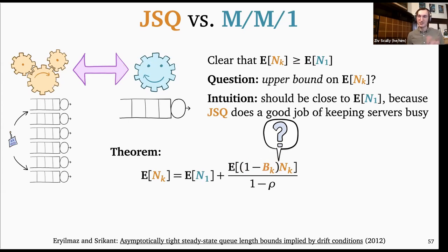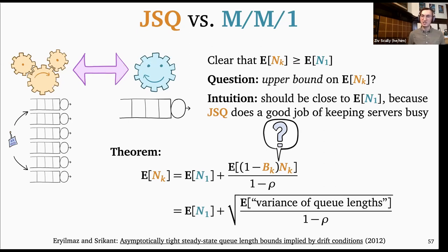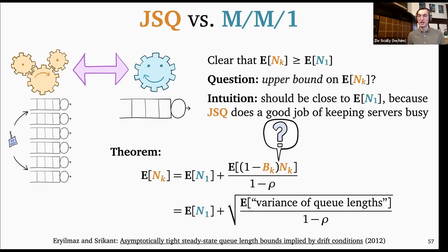We have this weird product of fraction of idle servers times number of jobs in the system. What this 2012 paper shows is that this expression, after some manipulations, can be bounded by the square root of the expected variance of queue lengths over 1 − ρ. This is promising because E[N_1] scales as 1/(1−ρ), so if we can get a remainder that is something like the square root of 1/(1−ρ), that's a nice upper bound.